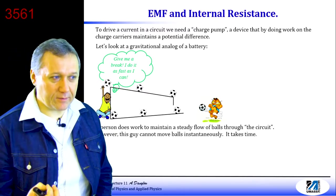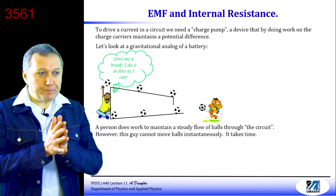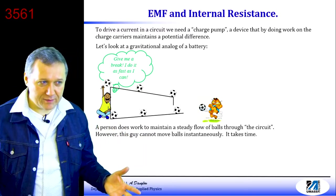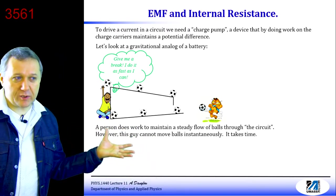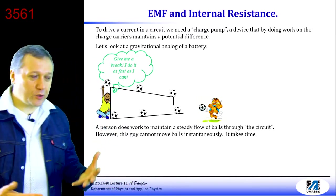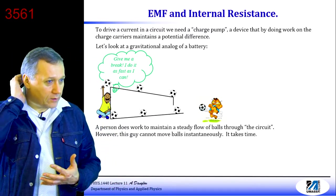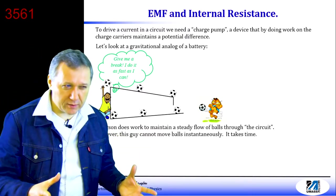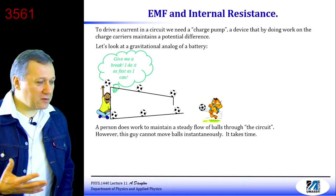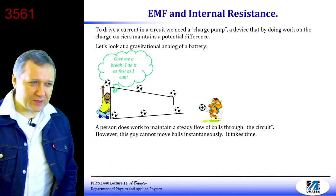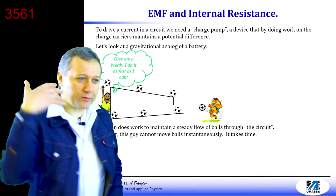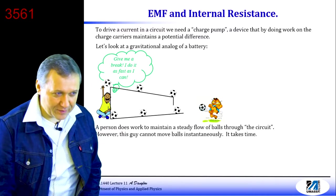Something similar happens in the battery. In a battery, charges are moved from one electrode to the other, and of course it doesn't happen instantaneously — it takes time. So the process is somewhat similar to this one. The battery by itself is going to bring some natural hindrance to otherwise a completely free flow of electrons. That process in the battery is quite complicated if you try to describe it in all the details.